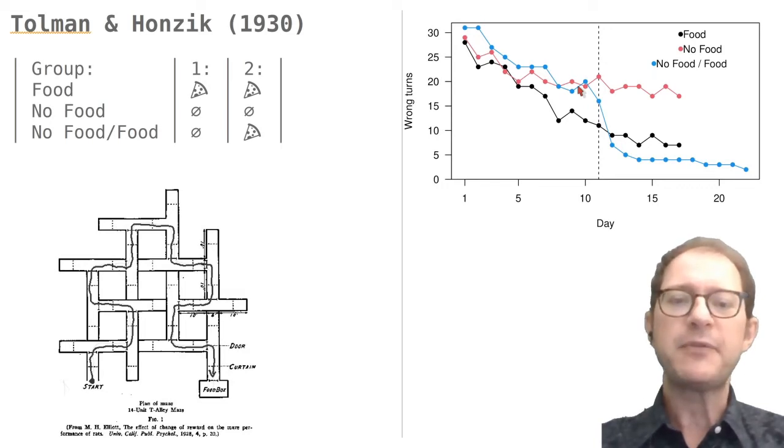This means that once they find food at the end of the maze, there is little learning left to do for the rats in the third group, and we see a sharp drop in the number of errors.